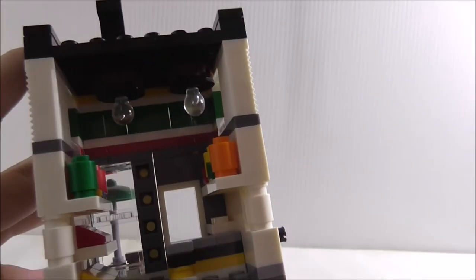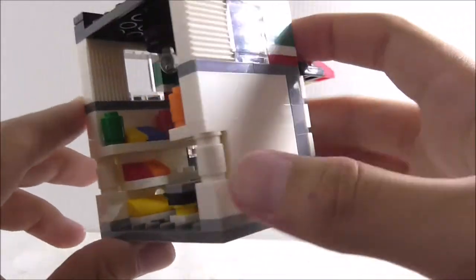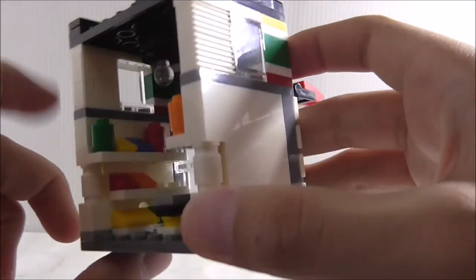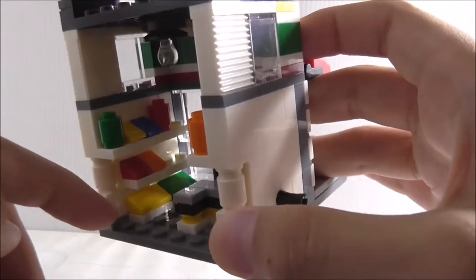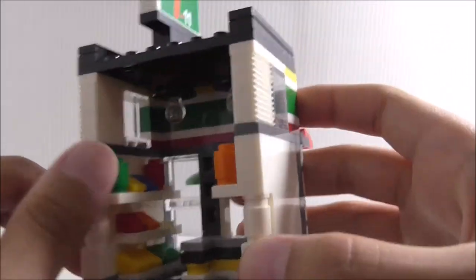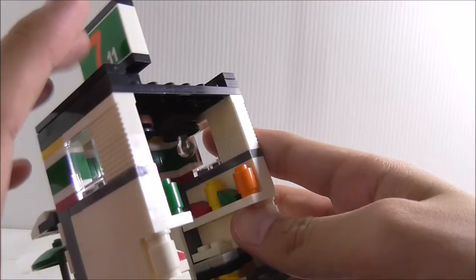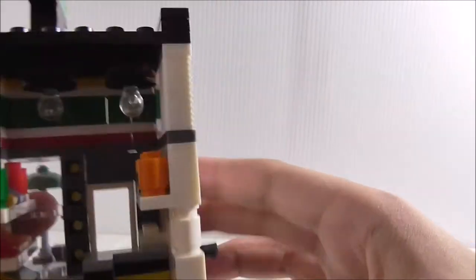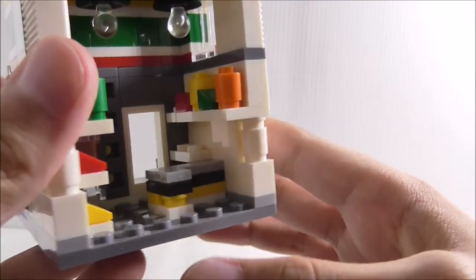On this shelf here, you got what I assume are grocery items—cheese slope pieces and cylinder pieces in different colors, placed randomly. You also got this counter right here.